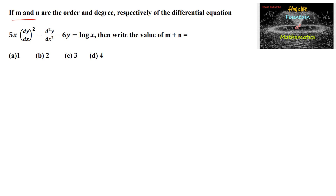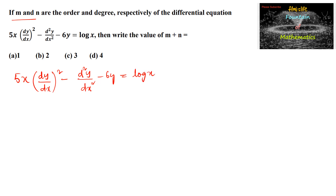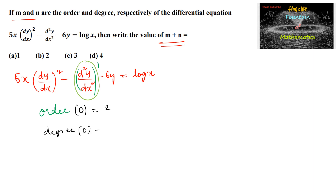If m and n are the order and degree respectively of the differential equation 5x(dy/dx)² minus d²y/dx² minus 6y equals log x, then find the value of m plus n. The given differential equation has the highest order derivative d²y/dx² with power 1. So the order m equals 2 and degree n equals 1. Therefore m plus n equals 2 plus 1, which is 3. Option C is the answer.